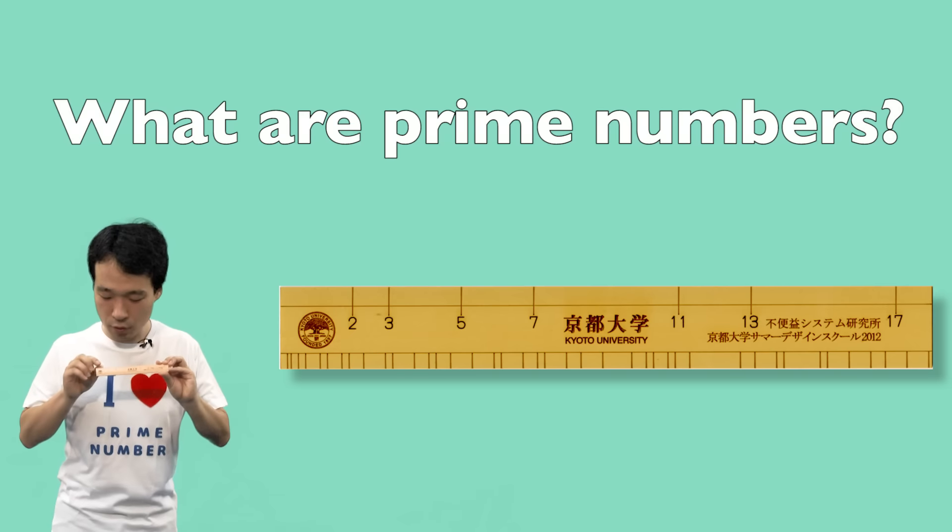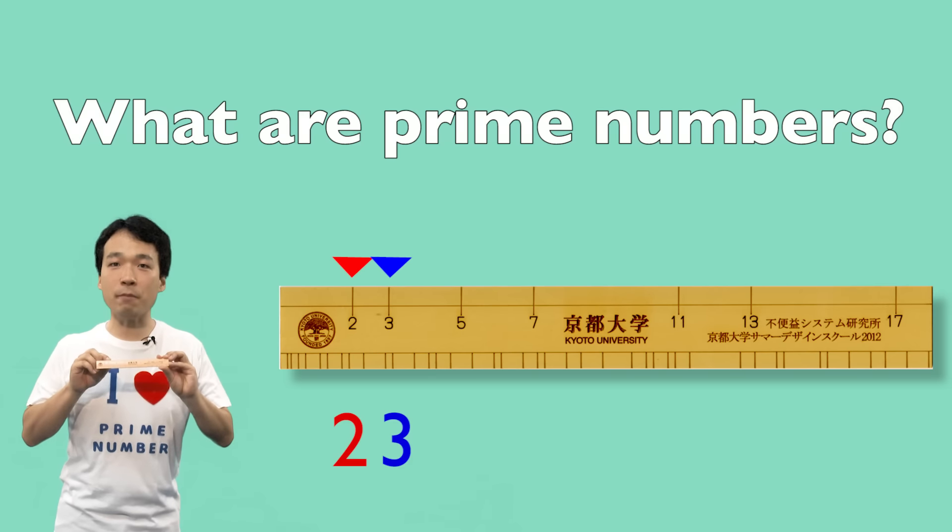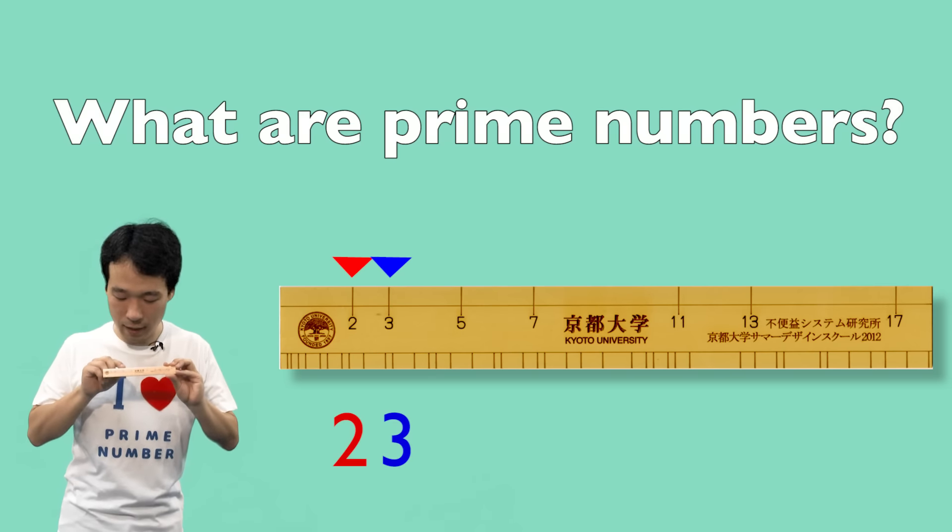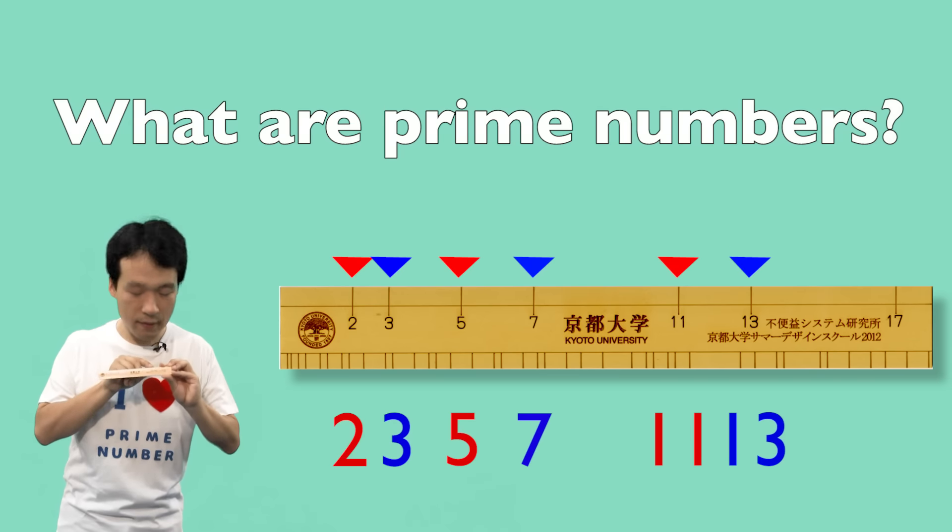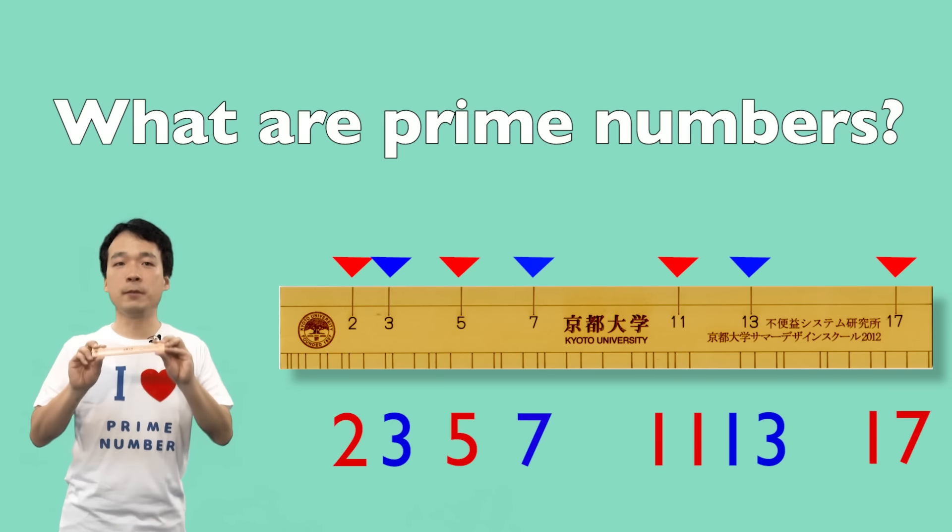For example, 2 and 3 are prime numbers. 5, 7, 11, 13, 17 are prime numbers.